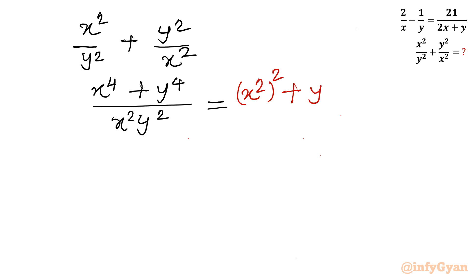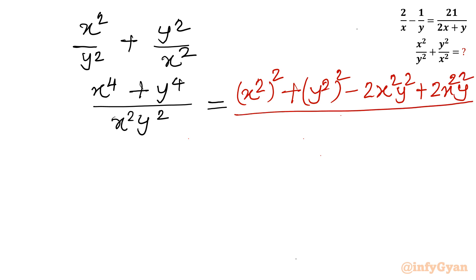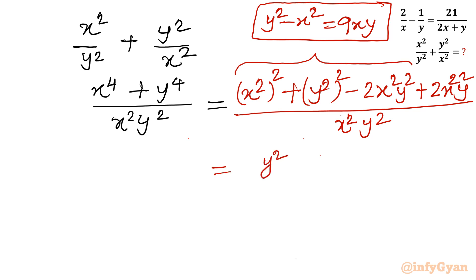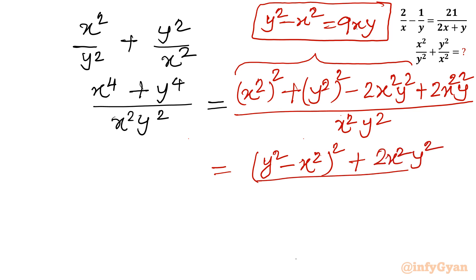So x⁴ is x² whole square, and y⁴ is y² whole square. We can rewrite the numerator as (y² minus x²)² plus 2x²y², all divided by x²y². This uses the identity (x²+y²)² = (y²-x²)² + 2x²y².